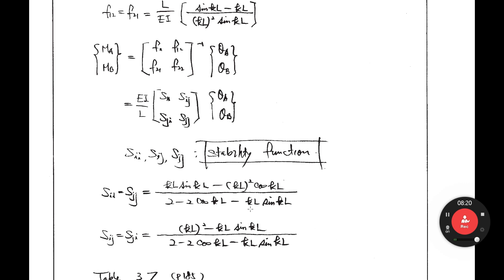If you don't have any P, what are the numbers? SII equals 4, SJJ equals 4, SIJ equals 2, SJI equals 2. That is the slope deflection equation from your undergraduate study: 4ζA plus 2ζB, and 2ζA plus 4ζB. As long as you have P, this stability function changes from those simple values.